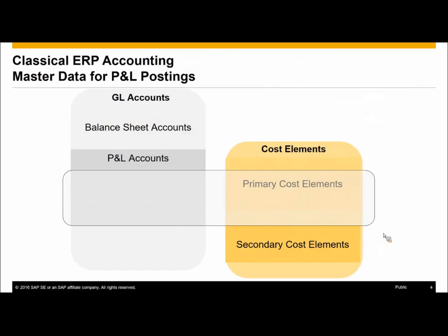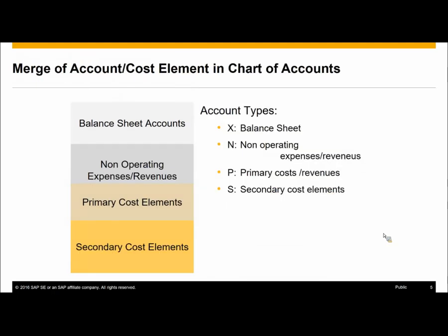In classical ERP, GL accounts and cost elements are two separate entities. For P&L accounts you can specify a primary cost element if you want data to flow to CO, and secondary cost elements are always independent in CO. Now in S/4, we have only one maintenance for GL accounts and cost elements — they are basically merged. We have balance sheet accounts and three types of P&L accounts: non-operating expense/revenues, primary cost elements, and secondary cost elements. The first two are not relevant for controlling and will not be created as cost elements.